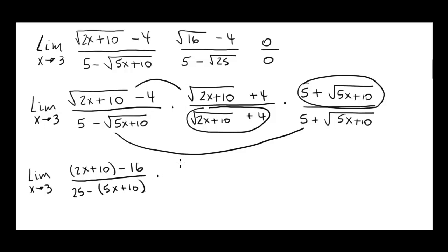And then times the two pieces that were not used, 5 plus the square root of 5x plus 10 from the numerator divided by square root of 2x plus 10 plus 4 from the denominator. And this is equal to limit as x approaches 3.